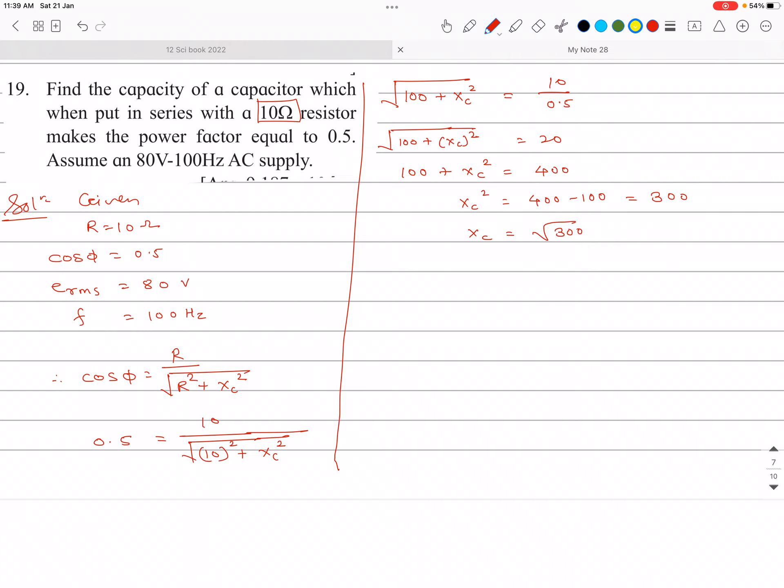Now this XC we can write 1 by omega C. So 1 by omega C is root 300. And we have to find out C. So C is equal to 1 upon root 300 multiplied by omega. So C is equal to omega multiplied by root 300.